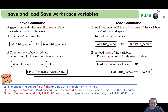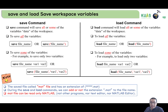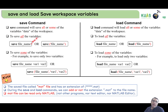Please note that the saved file — the file saved from the workspace — is called a MAT file because its extension is .mat. For example, the file name becomes 'file_name.mat'. During the save and load process, you can include or omit the .mat extension; both work the same way for both save and load commands.